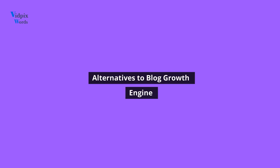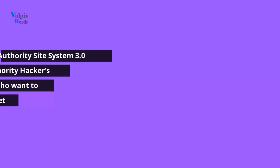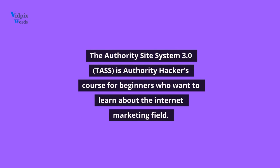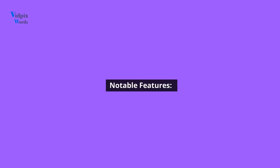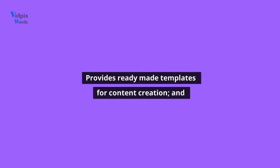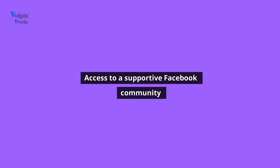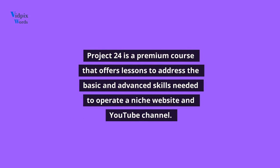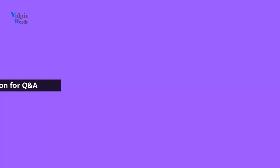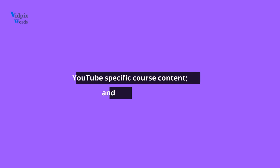Alternatives to Blog Growth Engine: Authority Hacker's Authority Site System 3.0 (TASS) is Authority Hacker's course for beginners who want to learn about internet marketing. Notable features include a 30-day money-back guarantee, lifetime access, ready-made templates for content creation, and access to a supportive Facebook community. Income School's Project 24 is a premium course offering lessons on basic and advanced skills needed to operate a niche website and YouTube channel. Notable features include access to members-only podcasts, live mastermind Q&A sessions, YouTube-specific course content, and free access to the Acabado WordPress theme.